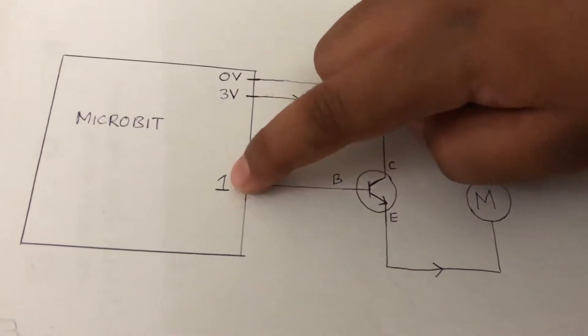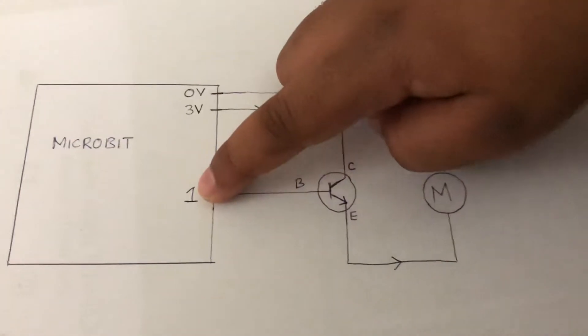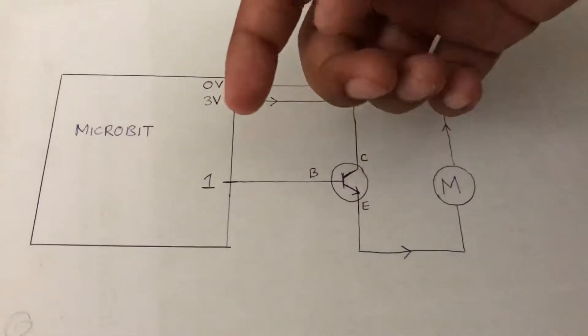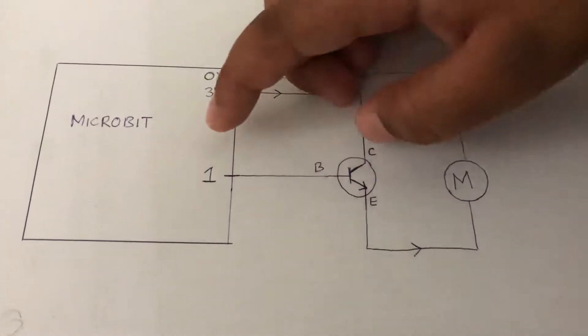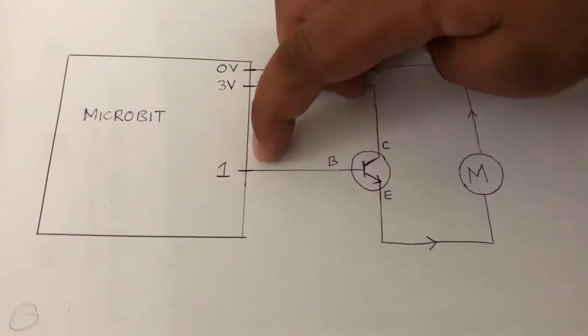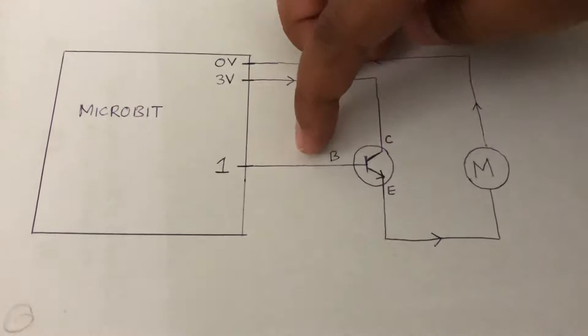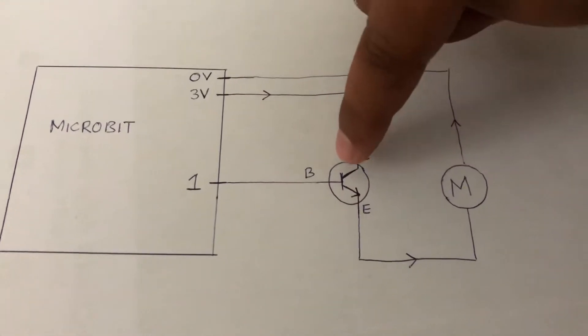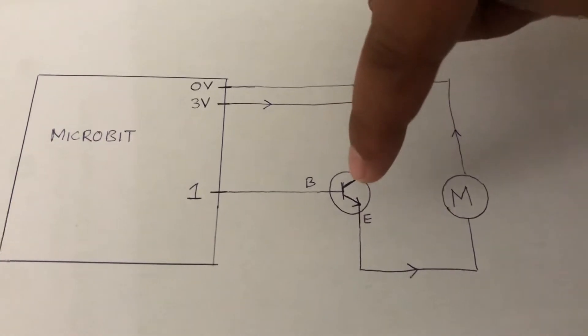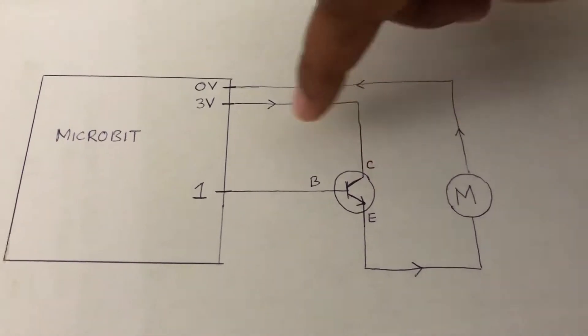We also have pin 1, which is in the micro:bit, and it sends a small amount of electricity through this wire into another leg called the base leg of the transistor. When it sends this electricity, it lets the 3 volts pass through.